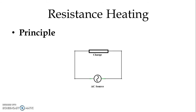Here the same circuit is represented in a different way. The charge to be heated is connected with the voltage source, and when we pass the current through the charge, I squared R power loss will be generated and heat will be produced.